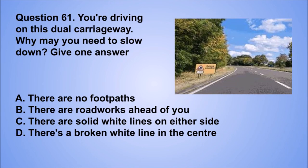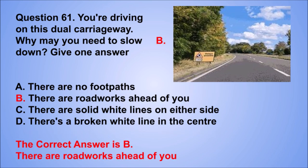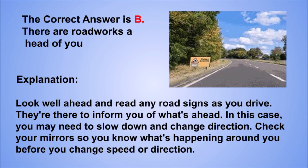Question 61. You're driving on this dual carriageway. Why may you need to slow down? Give one answer. A. There are no footpaths. B. There are roadworks ahead of you. C. There are solid white lines on either side. D. There's a broken white line in the center. The correct answer is B, there are roadworks ahead of you. Look well ahead and read any road signs as you drive. They are there to inform you of what's ahead. In this case, you may need to slow down and change direction. Check your mirrors so you know what's happening around you before you change speed or direction.